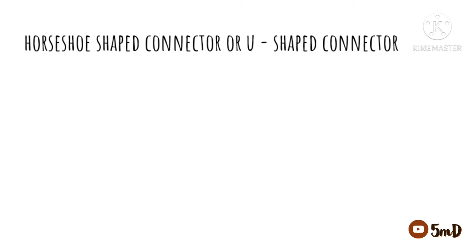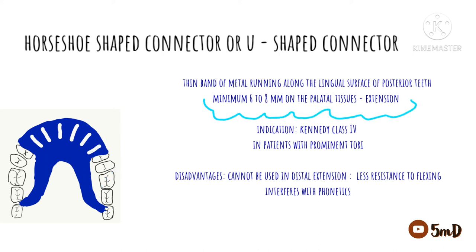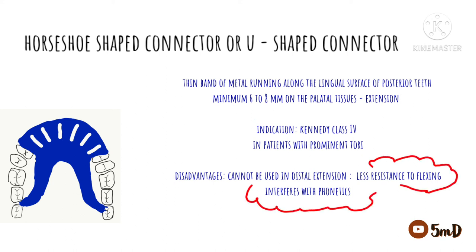Next we have the horseshoe-shaped or U-shaped connector. It can be indicated in anterior teeth replacement but never for posterior teeth replacement or distal extension. It is a thin band of metal running along the lingual surfaces of the posterior teeth and can extend 6 to 8 mm onto the palatal tissues. The problem is that, though it is strong, it has less resistance to flexing, and its greater bulk may interfere with phonetics in the anterior region.